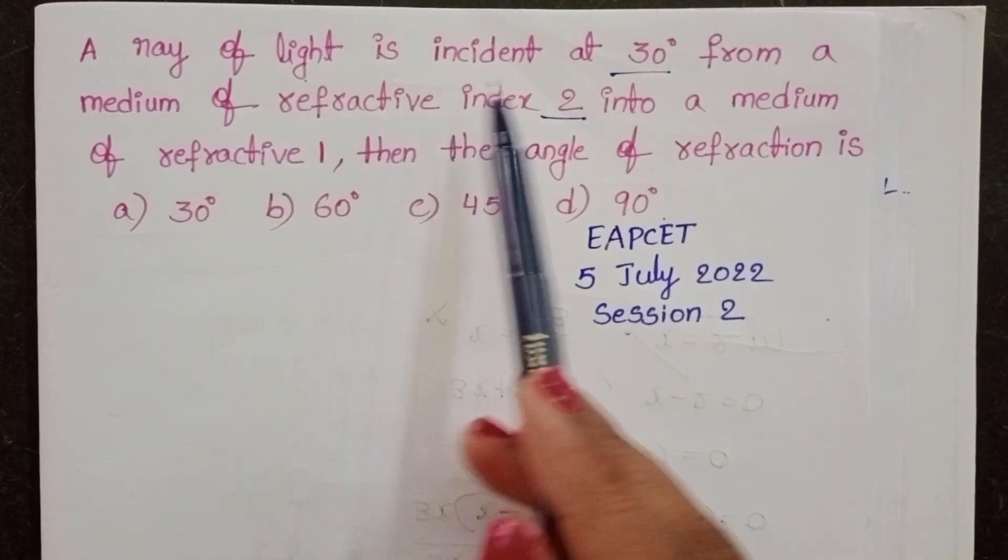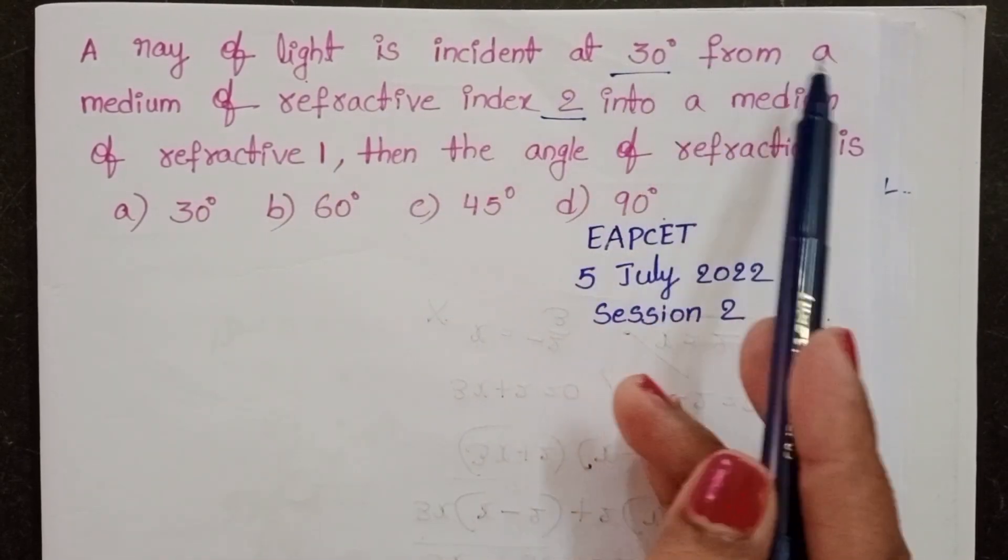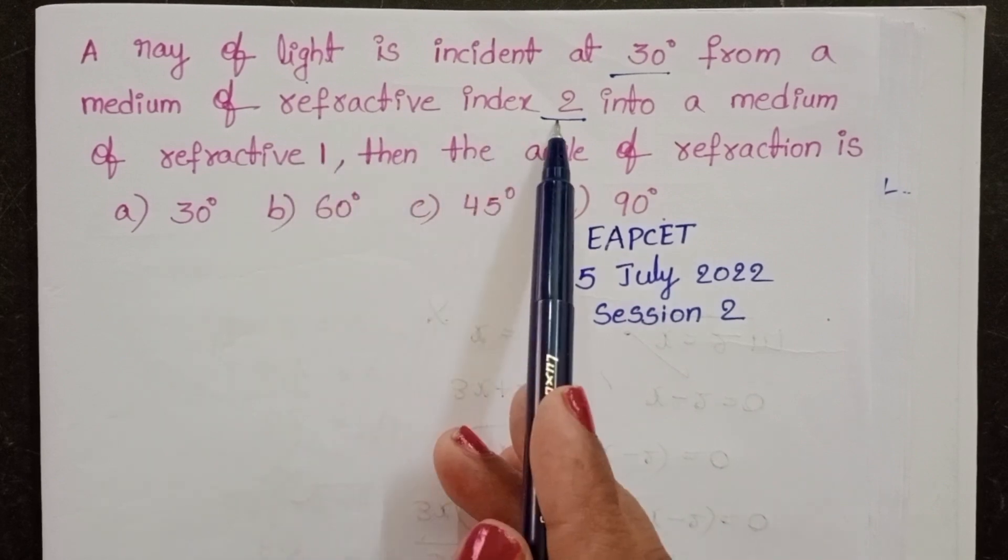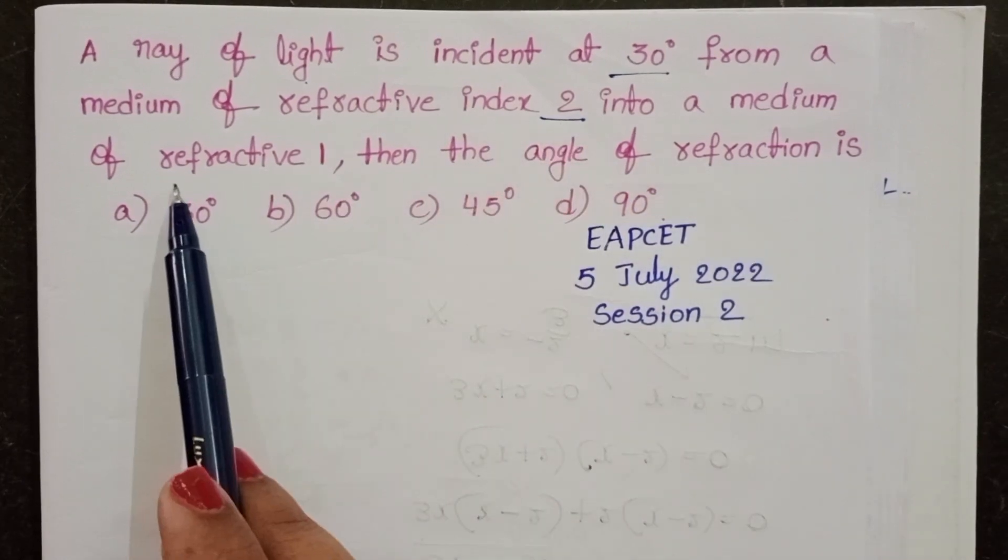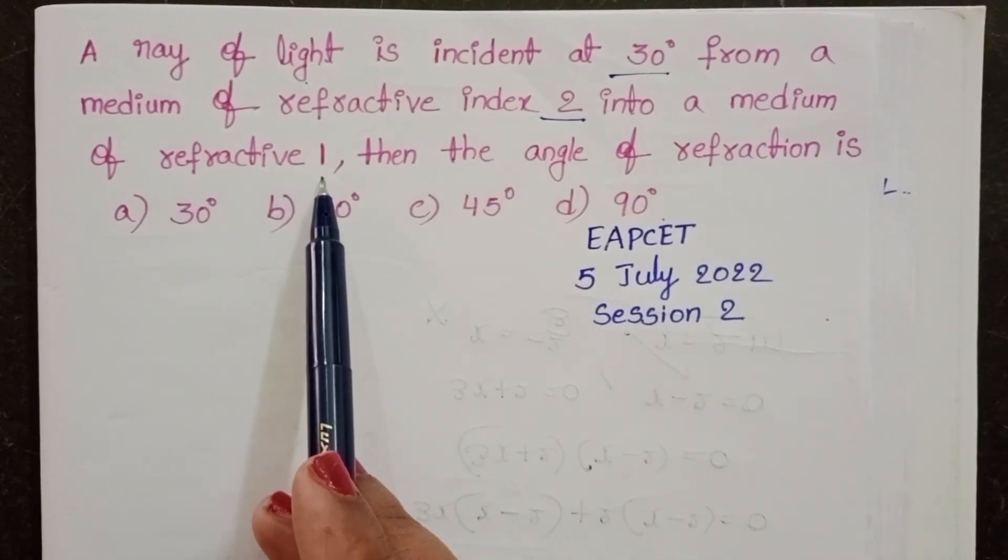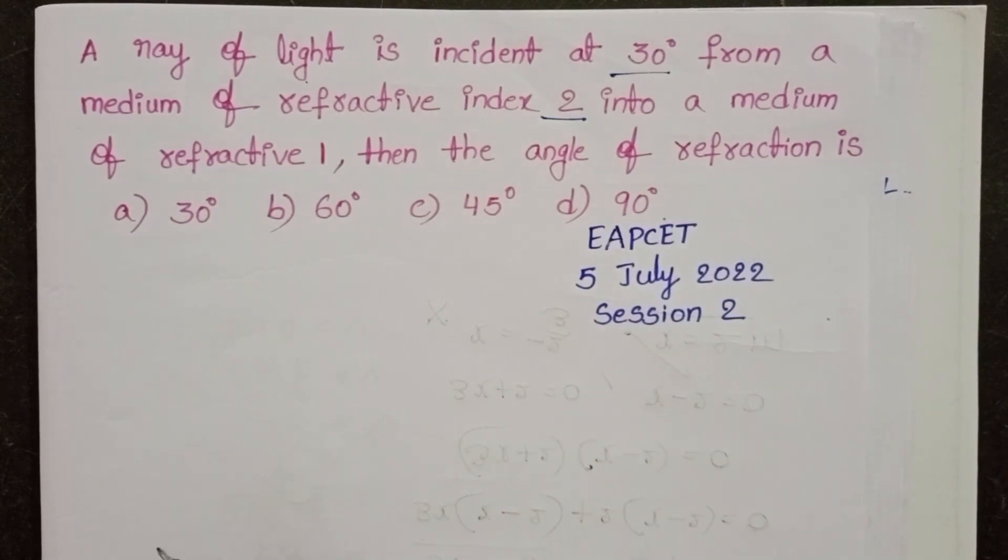A ray of light is incident at 30 degrees from a medium of refractive index 2 into a medium of refractive index 1. Then the angle of refraction is.